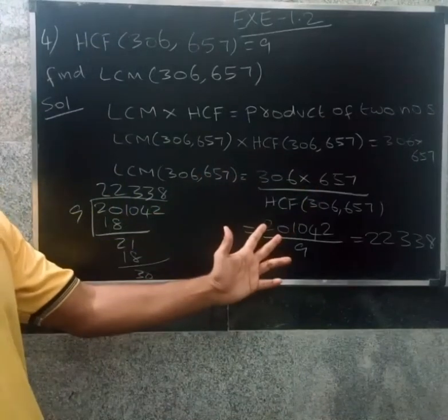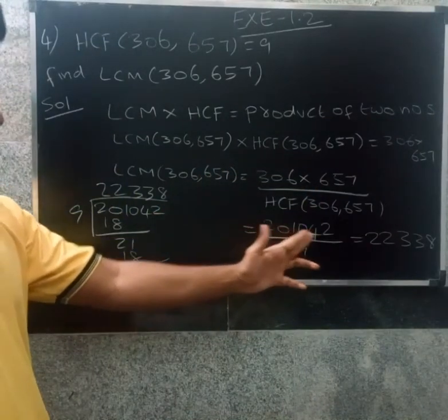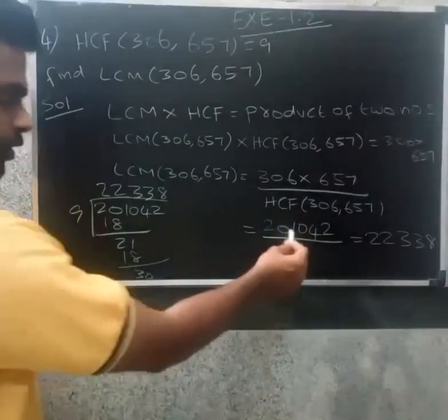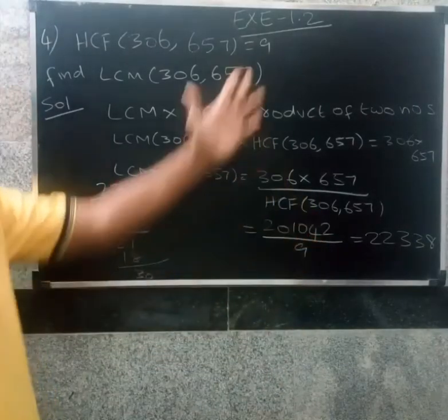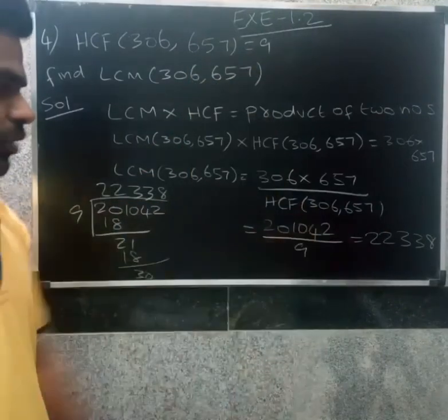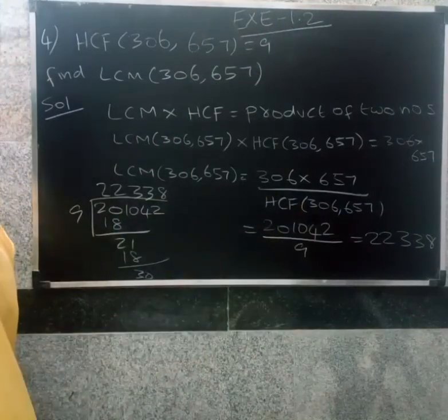If we multiply the answer, two lakhs one thousand forty-two, divided by the value of the answer. If we divide the answer, 22,338. Thank you.